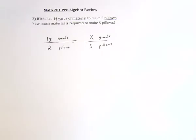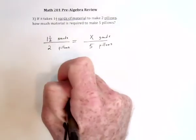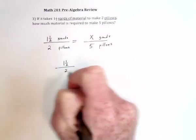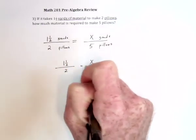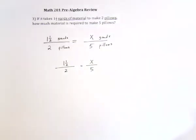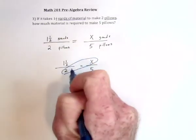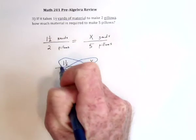Or, you can drop the words away after this, and it would be one and a half over two equals x over five. So next comes the cross multiplication. So we'd have this direction would be two x. This direction would be five times one and a half.